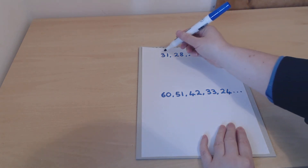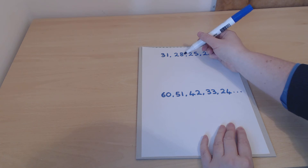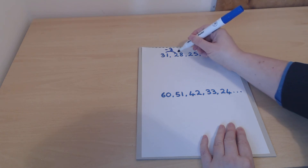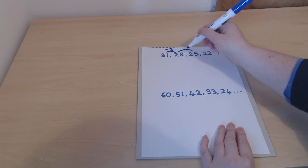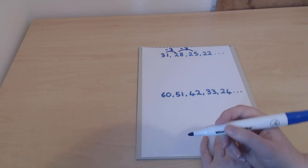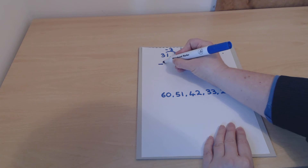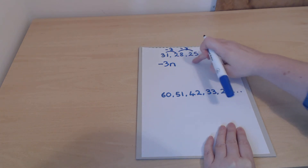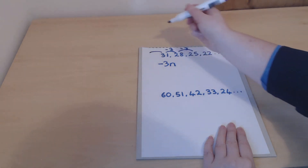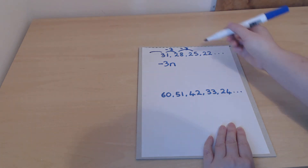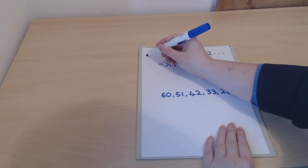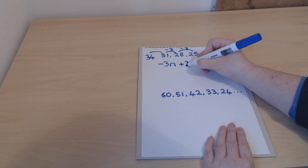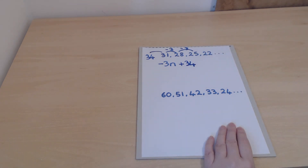Here we have 31 and then the next one is 28, so this time the difference is minus 3. Checking: to go from 28 to 25 we also take off minus 3. That means we've got minus 3n this time. We can work out what goes on the end by going back one step — our sequence goes minus 3 this way, so going the other way we add 3, which would give 34. So the rule is minus 3n plus 34.